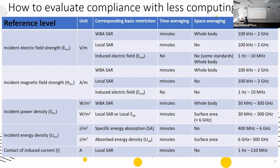Reference levels are much easier to calculate, but they are conservative because standards make conservative assumptions when deriving reference levels from basic restrictions. So if the power of your device is close to the limit, as in wireless power transfer, you may need to calculate the basic restrictions directly, even though it requires much more computation time and computing power.